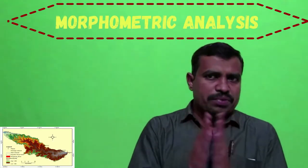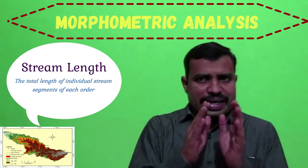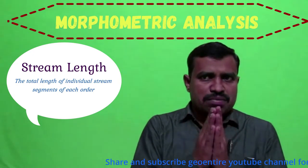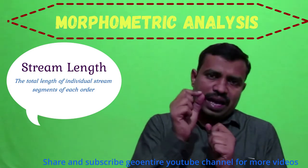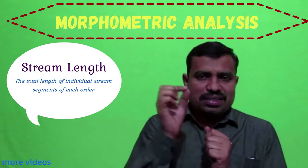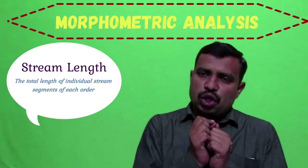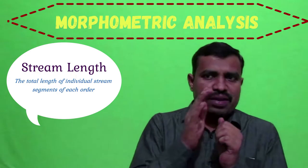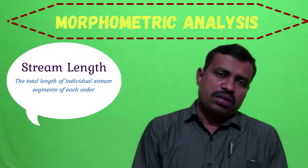Stream length is the total length of individual stream segments of each order. Stream length in each order increases exponentially with increasing stream order. In the Kayadur river basin: first-order streams total 2,470 km, second-order 909 km, third-order 526 km, fourth-order 249 km, fifth-order 99 km, sixth-order 43 km, and seventh-order 66 km.